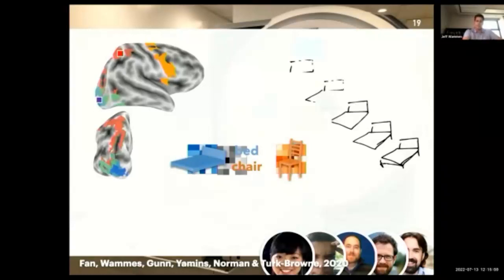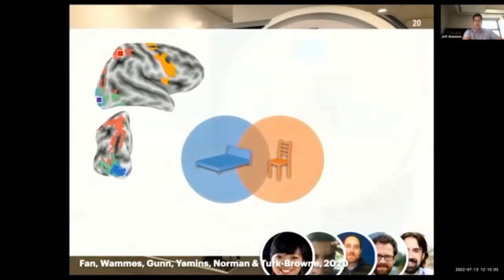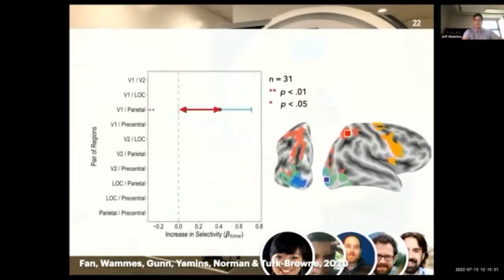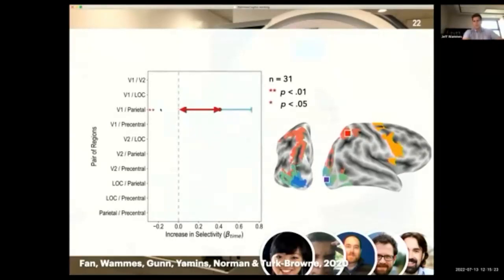And so the idea is if these patterns are becoming more distinctive, the accuracy of the classification should get better from early to late in the task. And so these red arrows here are representing our estimate of that measure—so that's the extent to which these concepts and their underlying representations seem to be differentiating as a result of training.